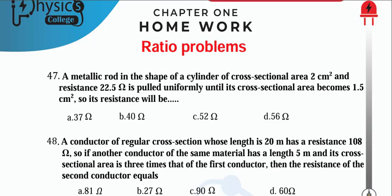A metallic rod in the shape of a cylinder has cross-section area A1 = 2 cm² and resistance R1 = 22.5 Ω. It is pulled uniformly until its cross-section area becomes A2 = 1.5 cm². The ratio formula is R1/R2 = (A2/A1)².